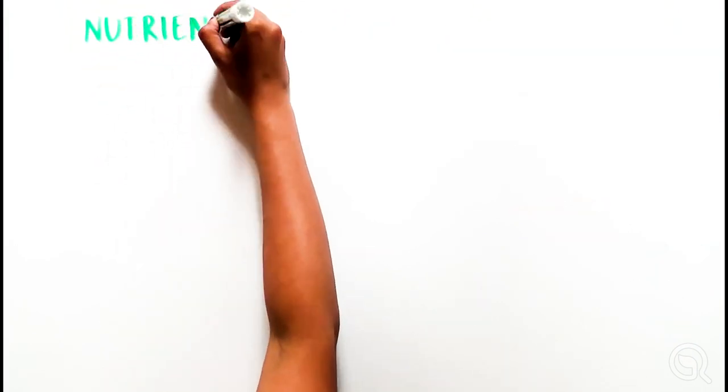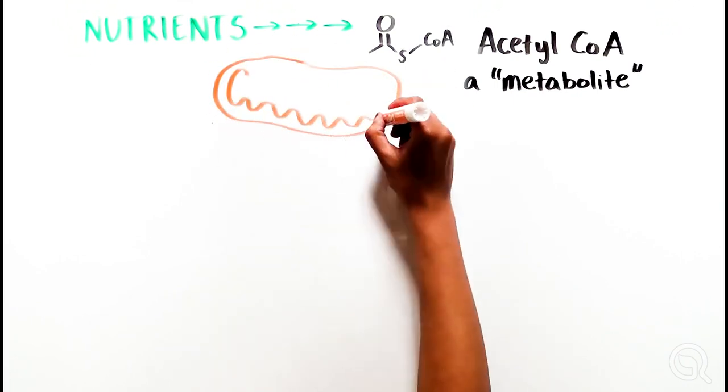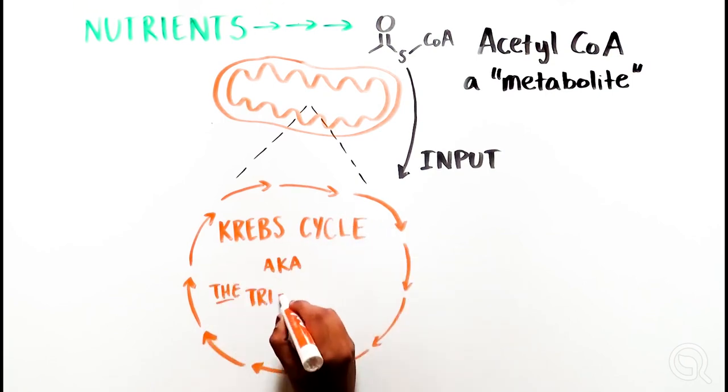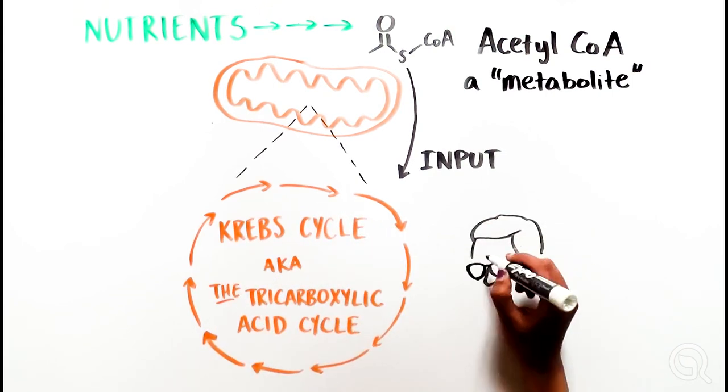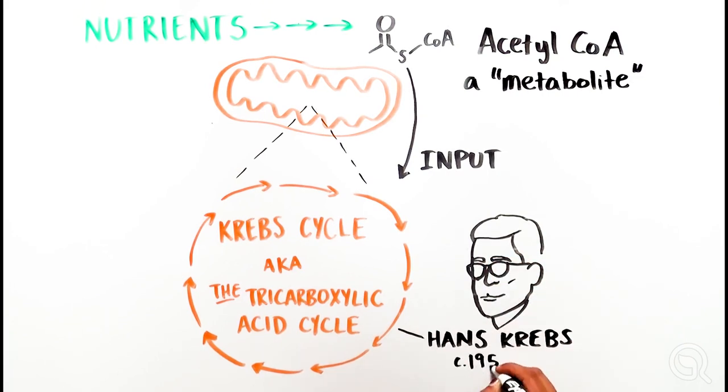Most of these nutrients get broken down into acetyl-CoA. If this is inside the mitochondria, this metabolite enters the Krebs cycle, also known as tricarboxylic acid cycle. This cycle is named after Hans Krebs, who first described it in 1957.